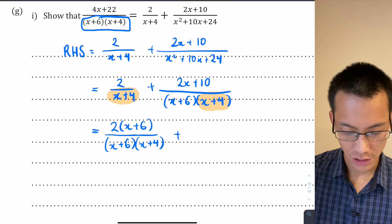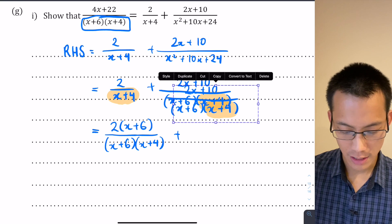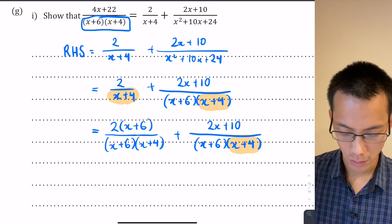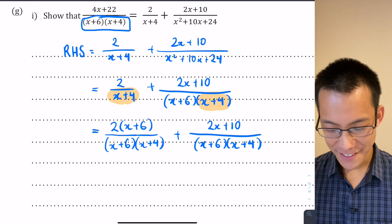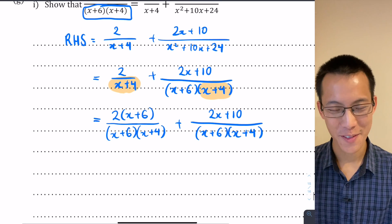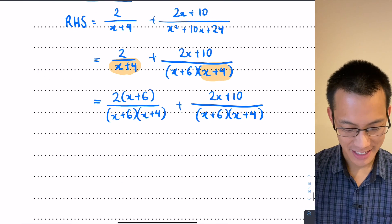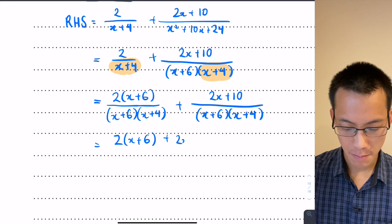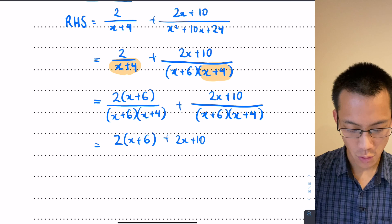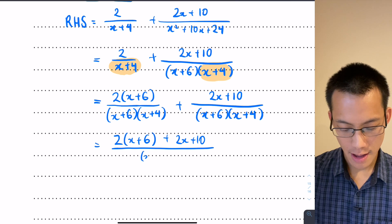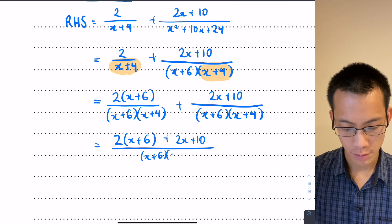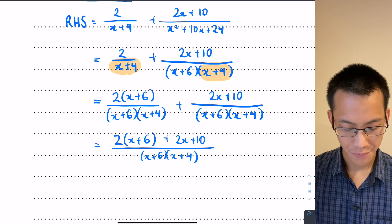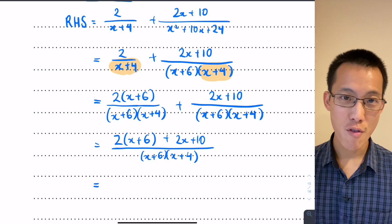This fraction here hasn't changed, so I'm going to cheat a tiny bit so this is faster for you to watch. Now I have the same denominator on both fractions, so I can combine these two together. I've got two lots of (x+6), I've got a 2x + 10, and then all of that is divided by this new denominator that I've just found: (x+6)(x+4).